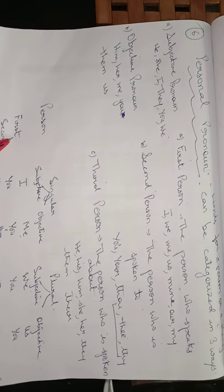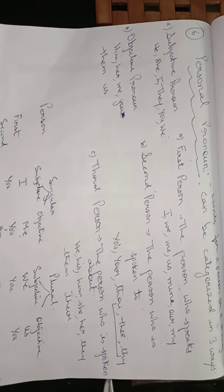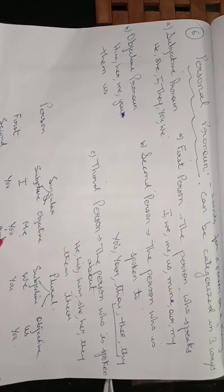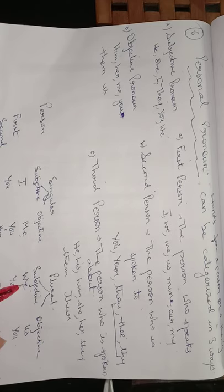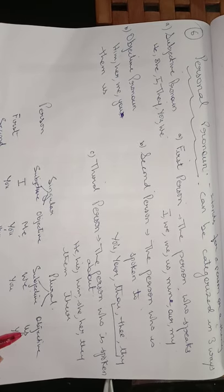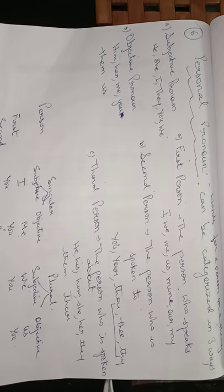For the first person singular, in the subjective case you use I, and in the objective you use me. For the second person, singular is you and objective is again you. For the third person, singular is he, she, it; in the object it will be him, her, and it. For the plural, you use we in the subject and us in the object. In the second person you use you for both subjective and objective. For the third person you use they in the subjective and them in the objective.